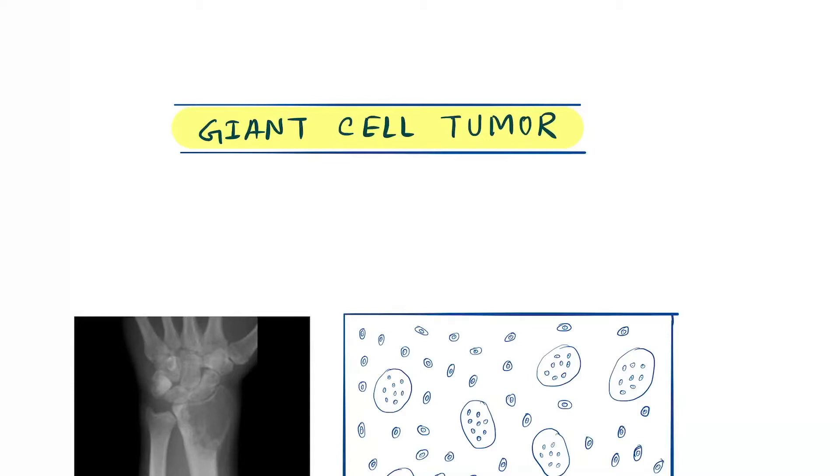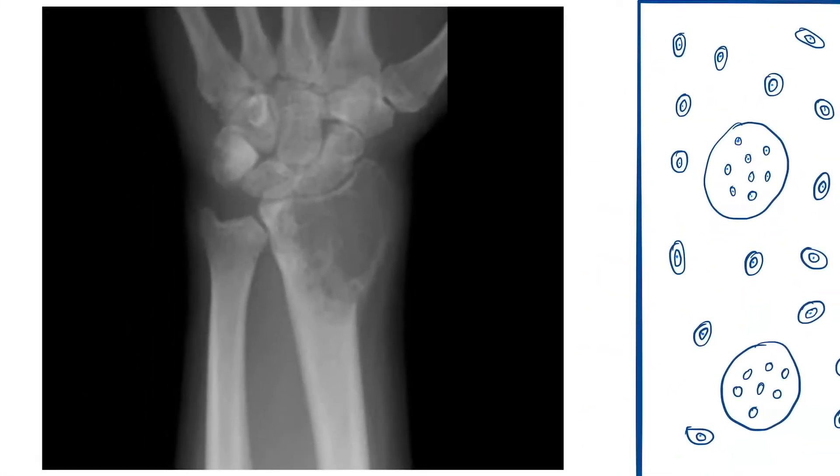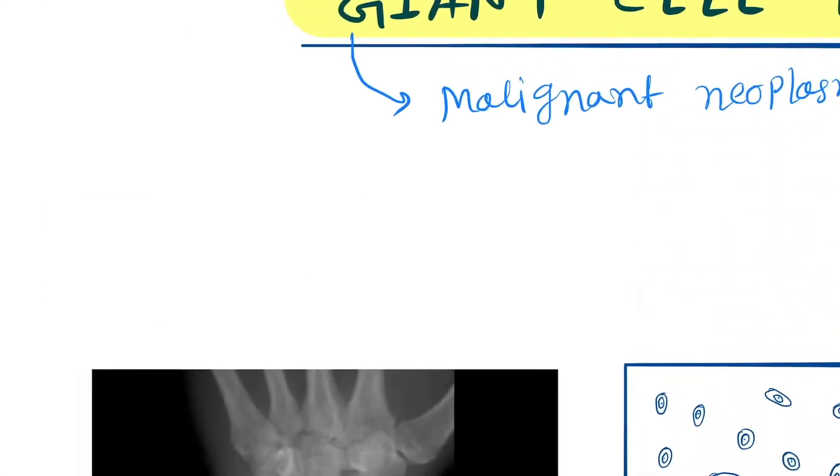Hello friends, today our topic is the giant cell tumor of the bone. Basically, giant cell tumor is a malignant neoplasm of bone. Here is the X-ray diagram; you can see this person is affected here.